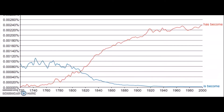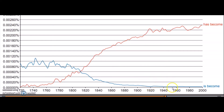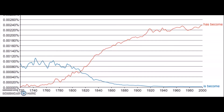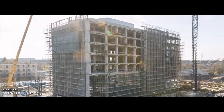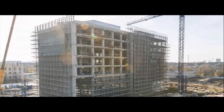From the same month and year, we have another n-gram graph. This graph shows a high frequency for the phrase 'has become' compared to the phrase 'is become' over the period from 1720 to 2000. The data indicates a decline in 'is become' and a corresponding rise in 'has become', which is the correct construction for expressing the present perfect tense in English. 'Has become' follows the standard pattern of using the auxiliary verb 'has' followed by the past participle, and this structure has remained consistent over time.